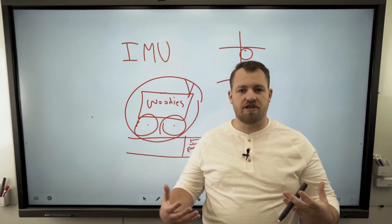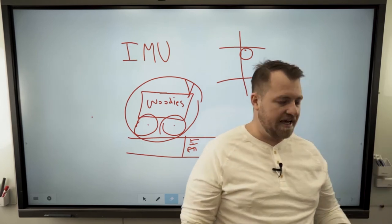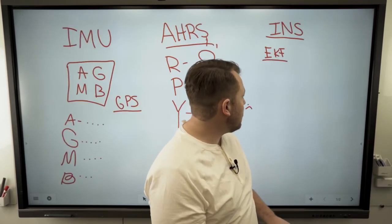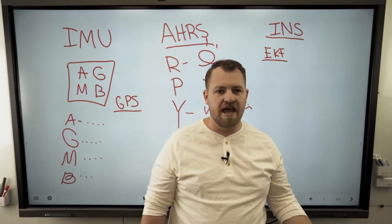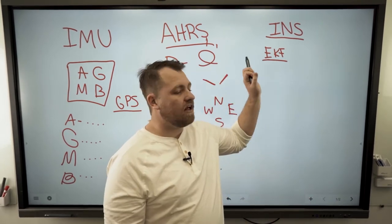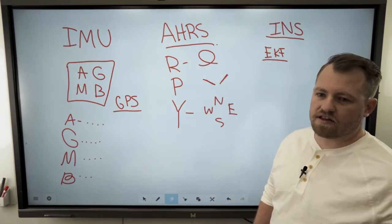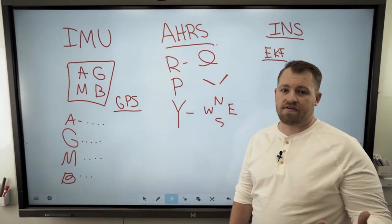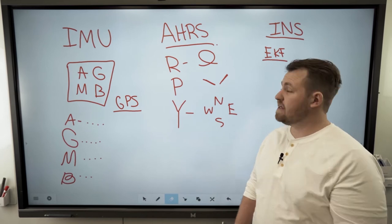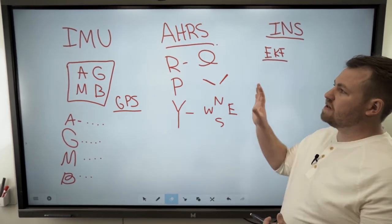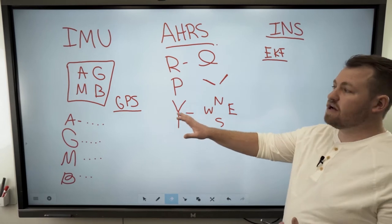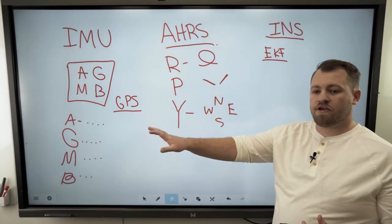If you need your GPS data fused into the mix, we recommend that you go with an INS, an Inertial Navigation System, and that's because it contains what we call an extended Kalman filter. The third sensor product that we offer, the highest grade or the highest quality version, is the INS. The INS is a combination of all the sensors down the line. It's a combination of the AHRS as well as the IMU.